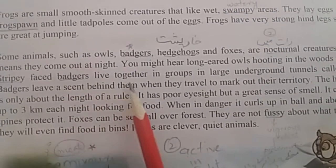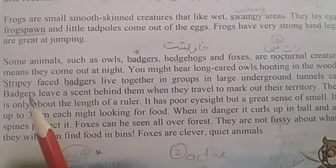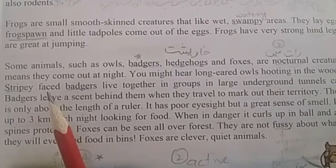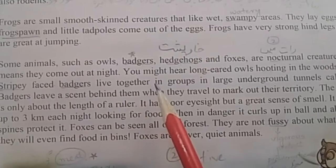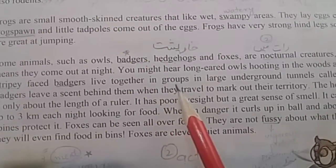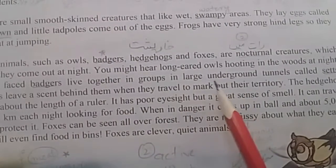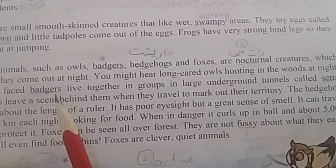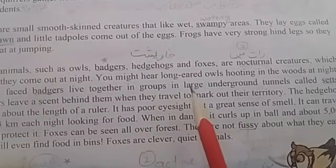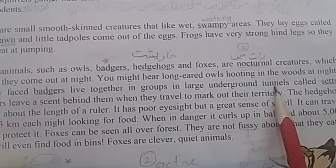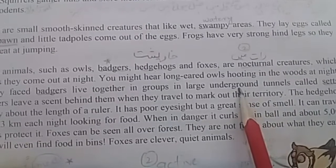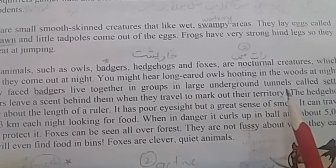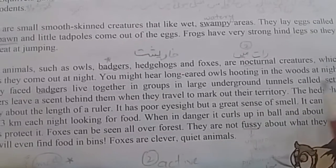Stripey-faced badgers — with stripes on their faces — live together in groups, not alone. They live in large underground tunnels called sets. Underground means below the ground, and just as birds have nests, the home of a badger is called a set.